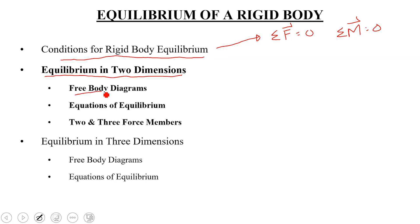Then we talked about the free body diagram. When you create a free body diagram, you need to isolate that rigid body from its surroundings — that means you cut it off from its surroundings. Wherever it is connected with the surroundings, you remove the connections. Once you remove those connections, you are going to get some reaction forces on your free body diagram. Once your free body diagram is complete, you apply the conditions of equilibrium on that rigid body.